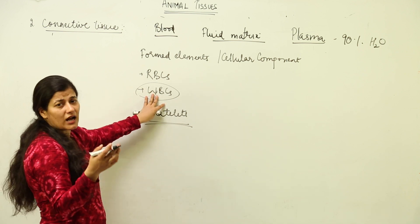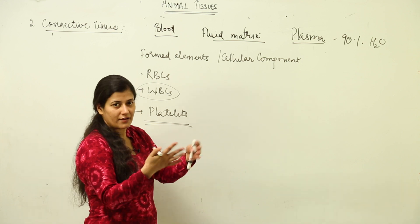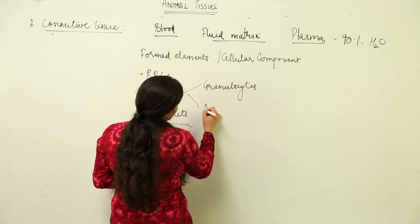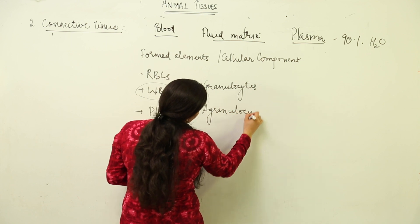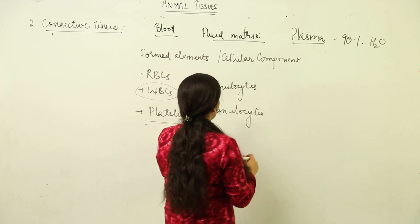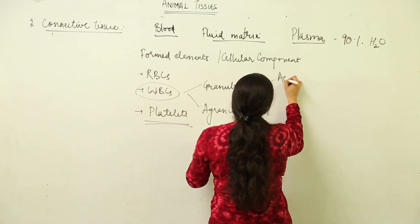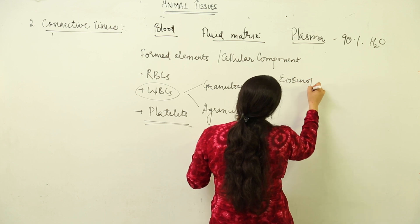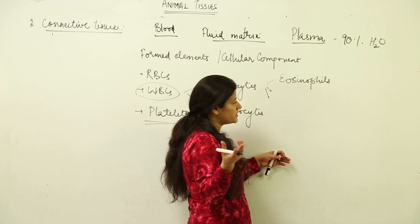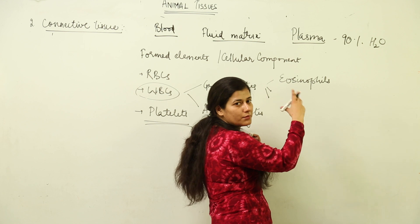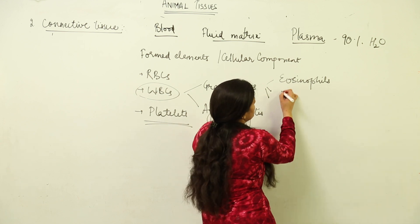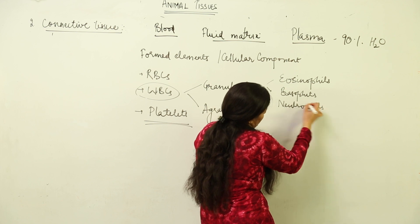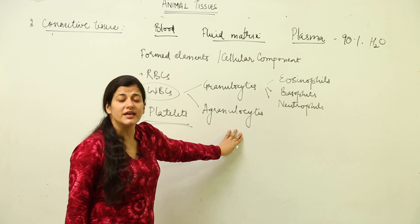WBCs are responsible for immunity; mast cells would also be present. WBCs have many varieties. There are two types: granulocytes and agranulocytes. In granulocytes, we have eosinophils — the name is given based on the dye used to stain them — and also basophils and neutrophils.